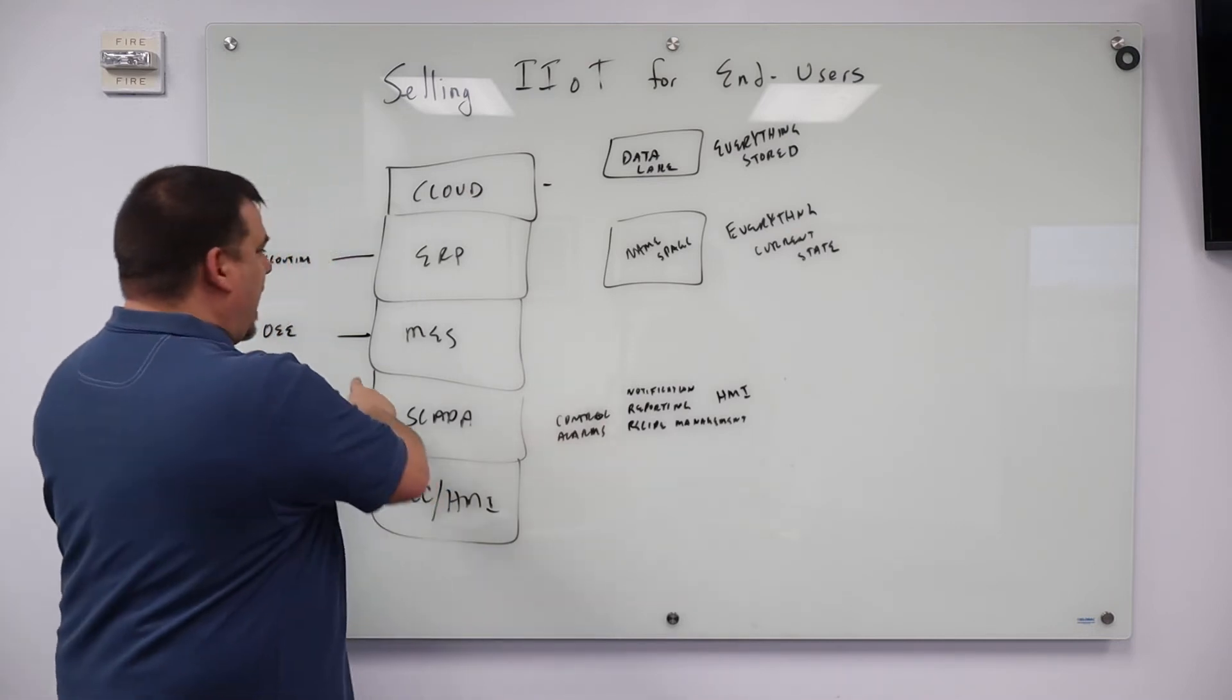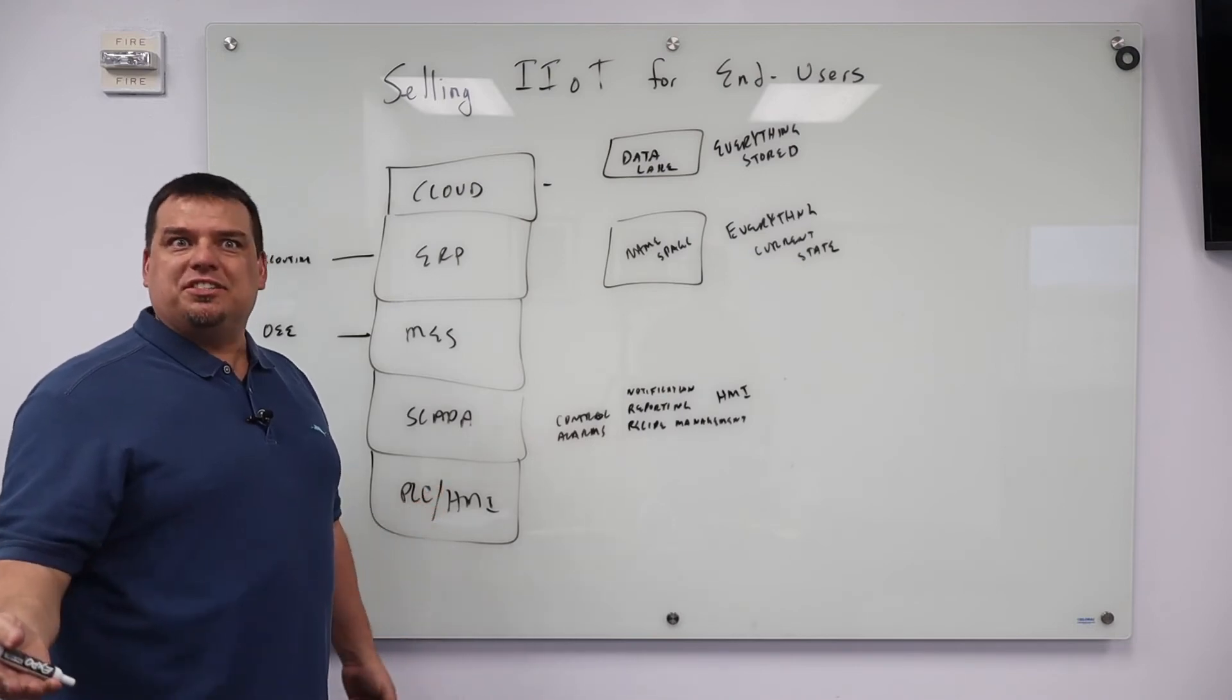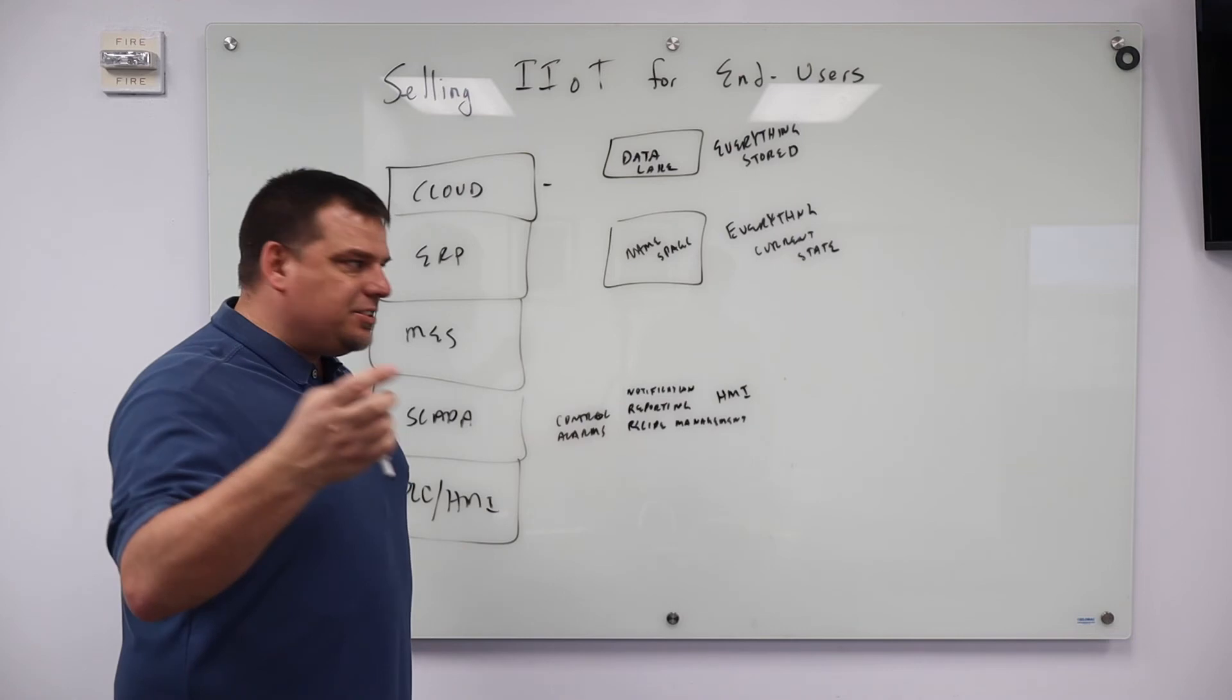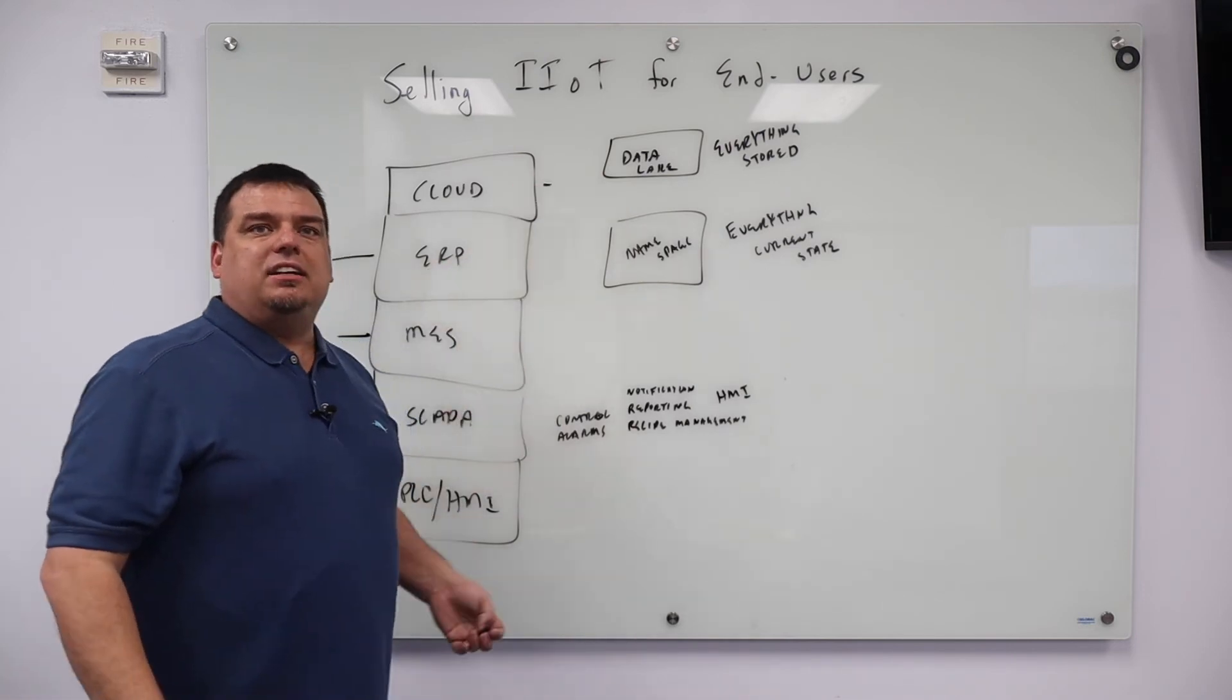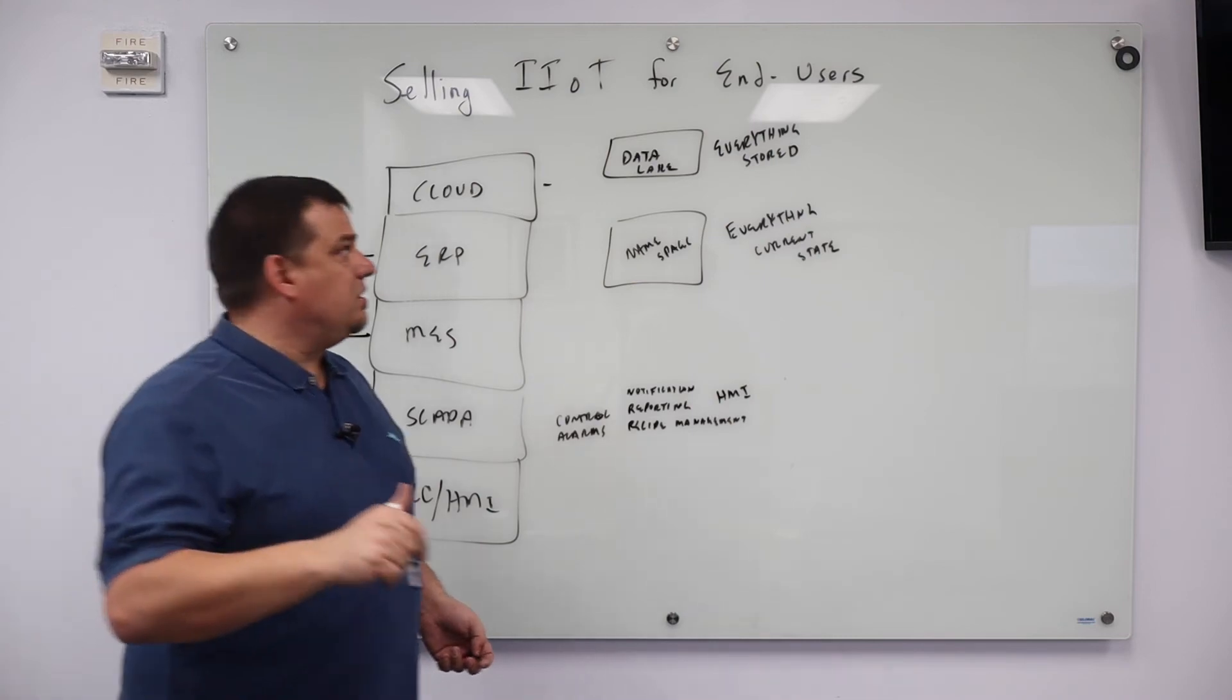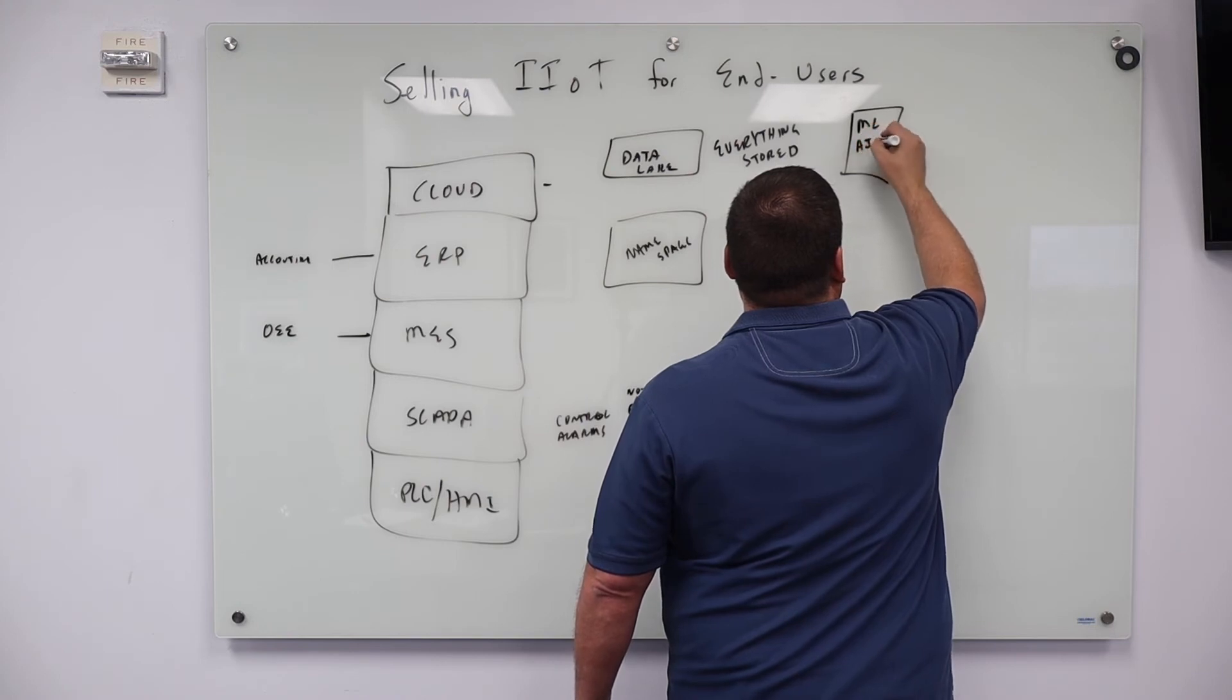Now imagine that you've got, now imagine that I have three different MES systems because of mergers and acquisitions. How do I compare the data of all my plants together? The answer is a unified namespace for real-time data and a data lake for everything else. What's the advantage of a data lake? Does the data format matter when you dump data into a data lake? No, it doesn't. Why? Because we have this piece of the stack that's got the machine learning and AI algorithms.